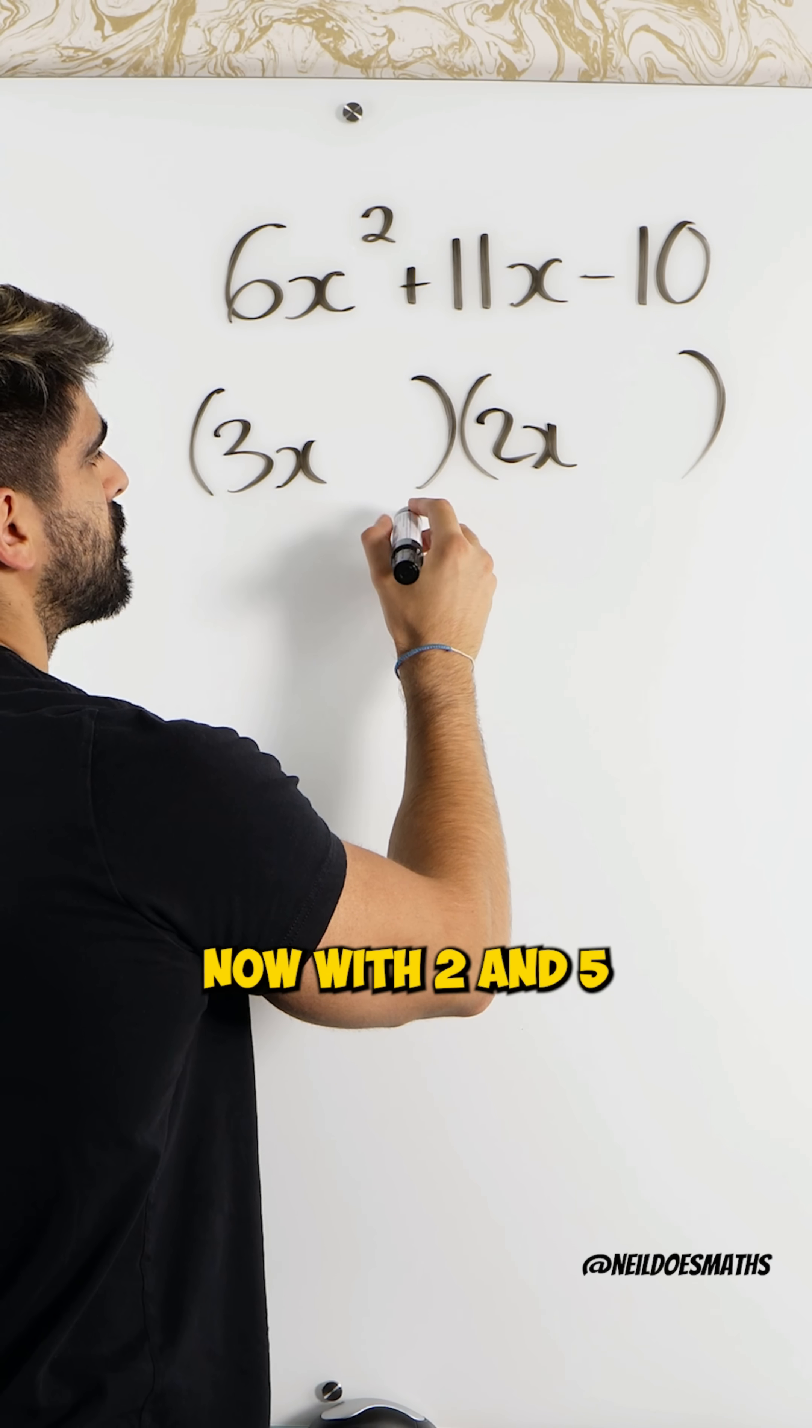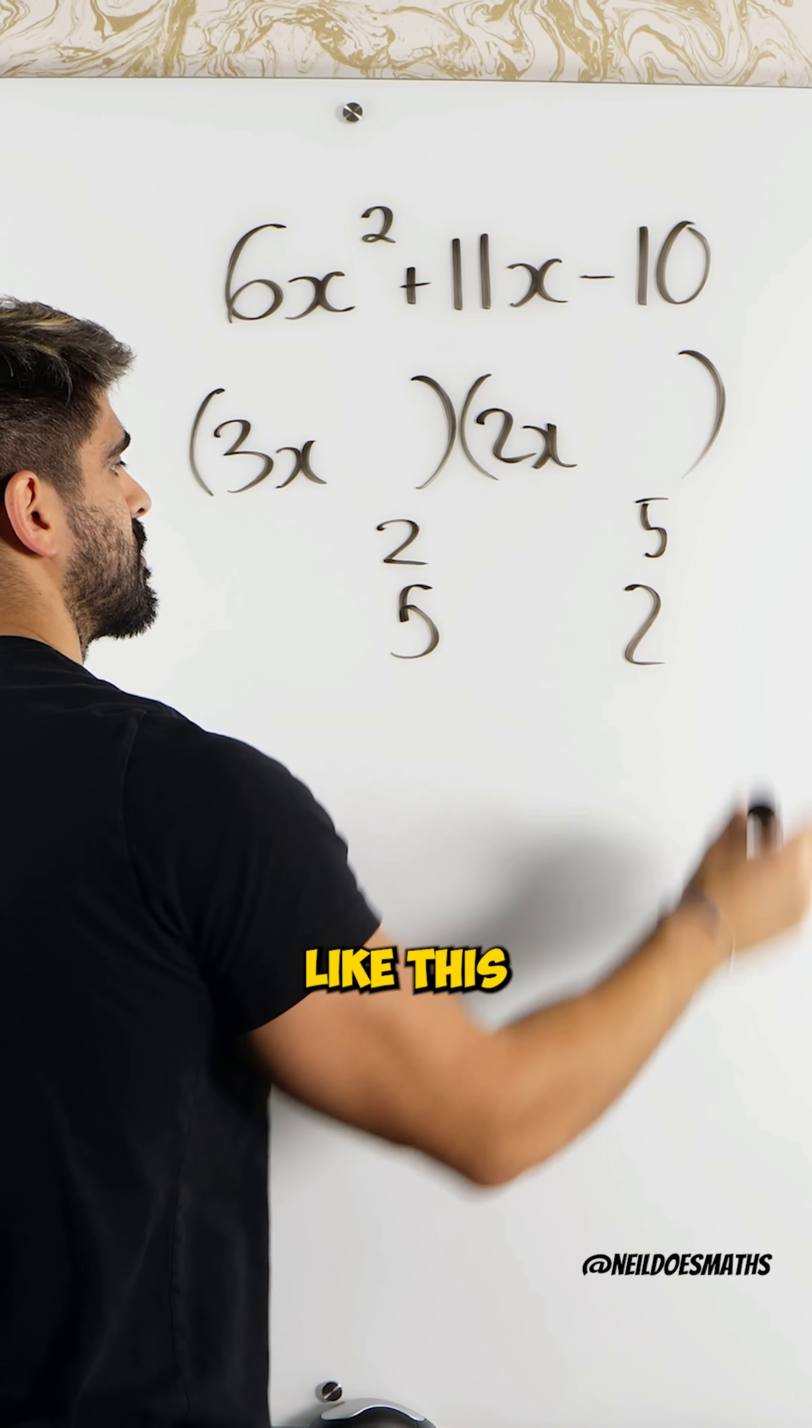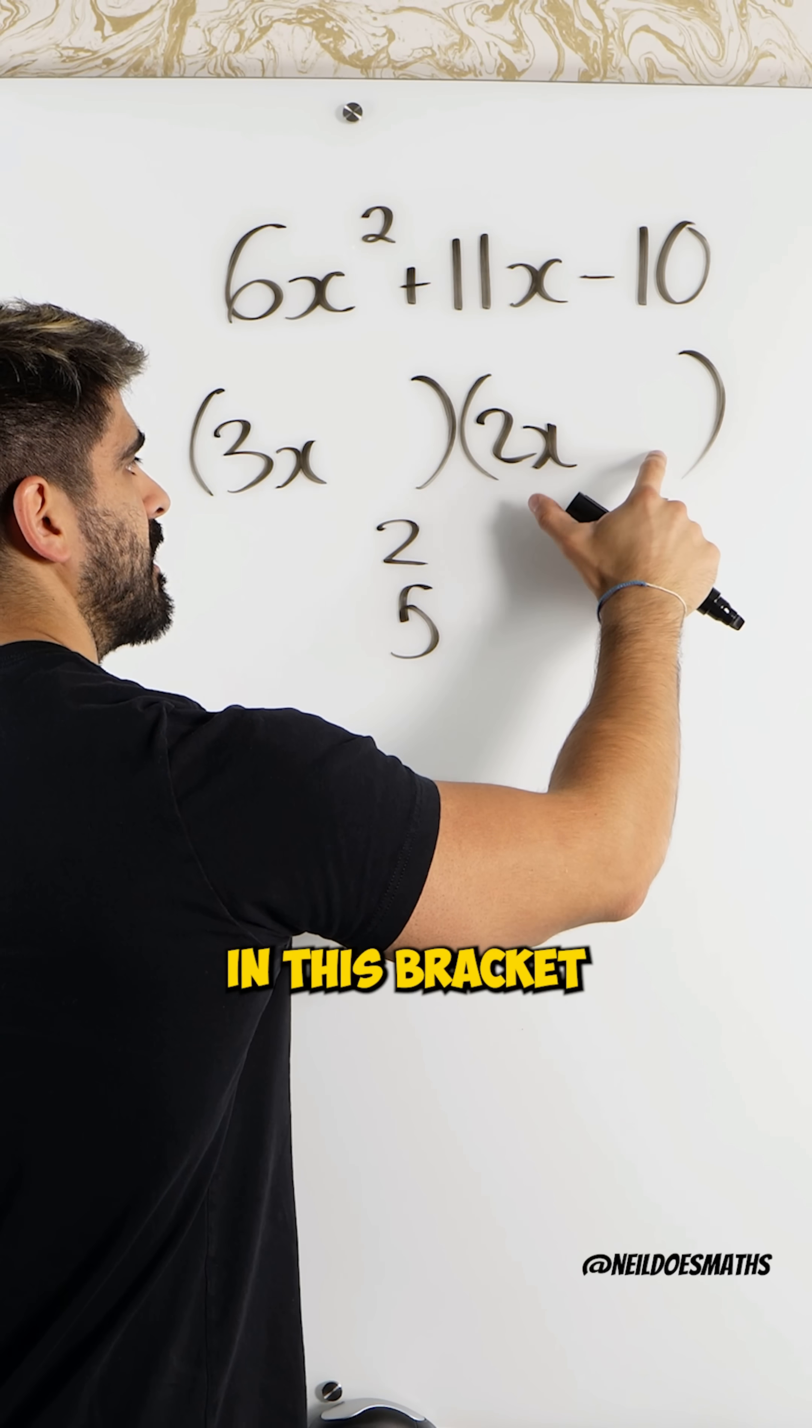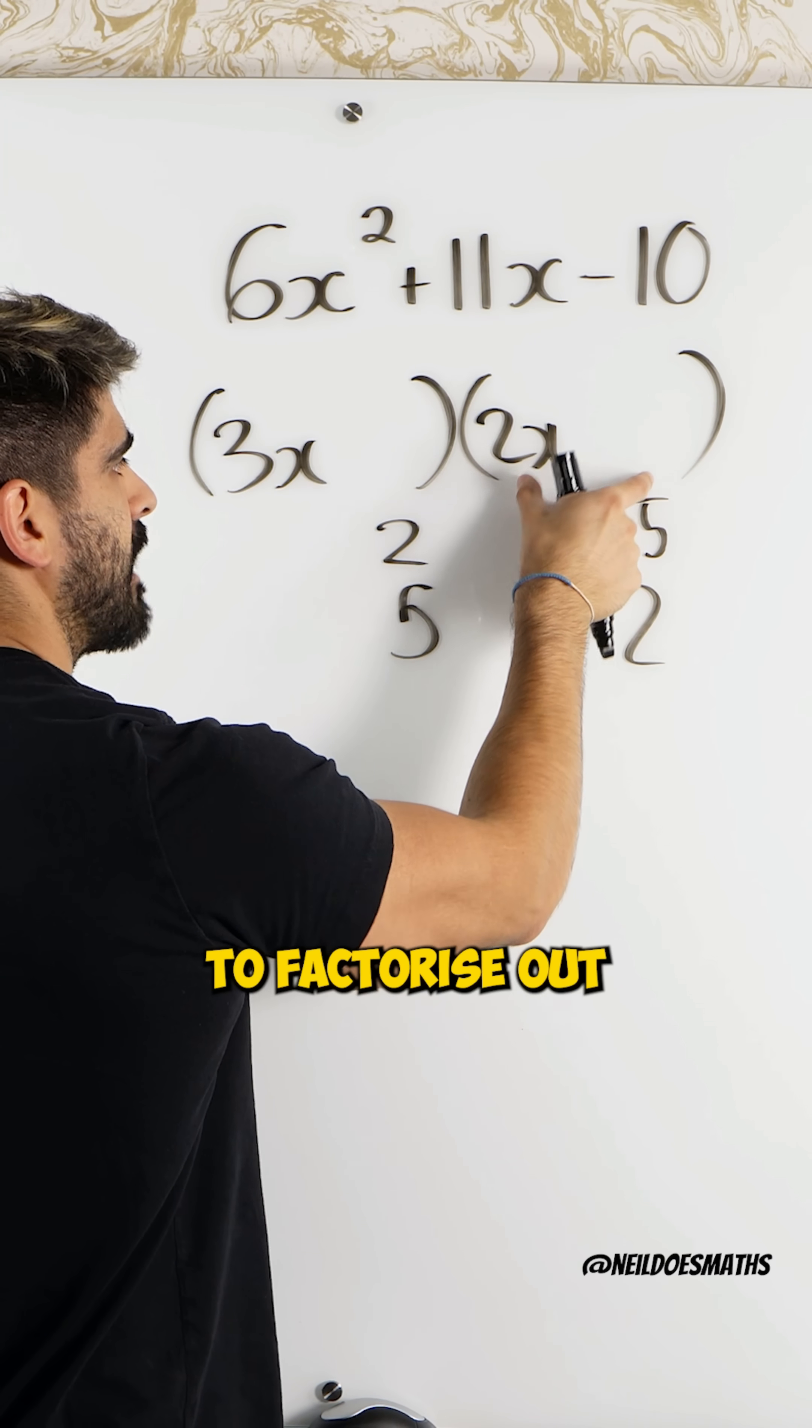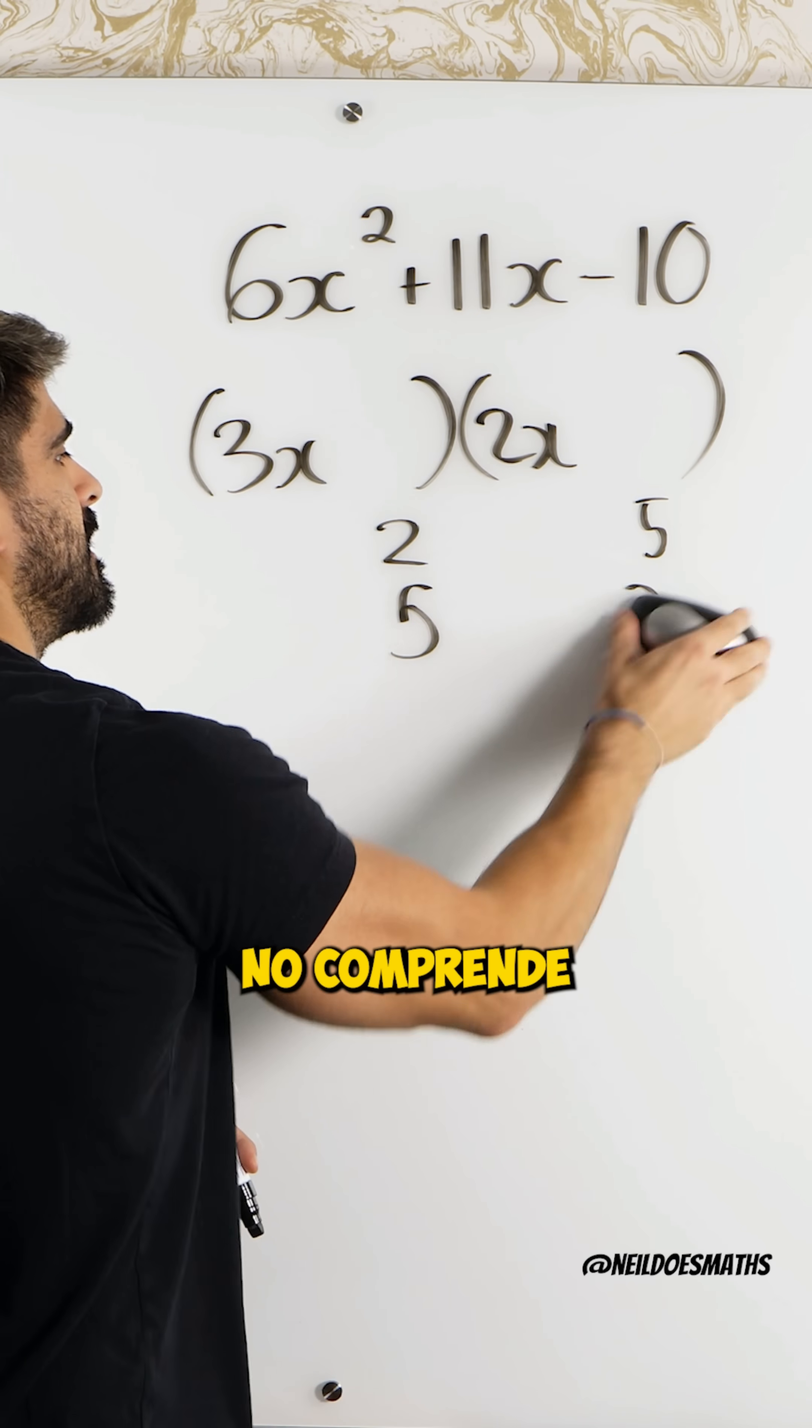Now, with 2 and 5, it could either look like this or it could look like this. There's a trick to this. This 2 cannot go in this bracket because there'll be two even numbers. That's not allowed because with two even numbers, you'd be able to factorize out a 2. You can't factorize out a 2 from here, meaning non comprende.